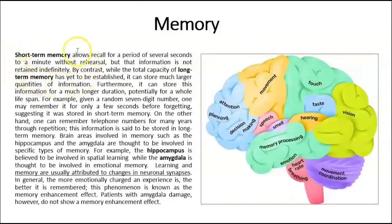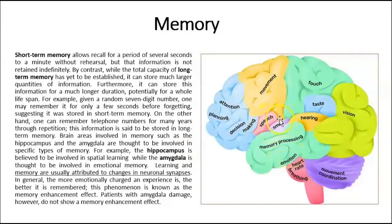Memory includes short-term memory, lasting from seconds to hours, and long-term memory, such as your own name, which you will never forget. Parts of the limbic system, especially the hippocampus, are important in memory. Most memories are associated with emotions — for example, smelling turkey and gravy brings memories of Thanksgiving along with emotions like love for family. The amygdala is the major component of the limbic system involved in emotion.